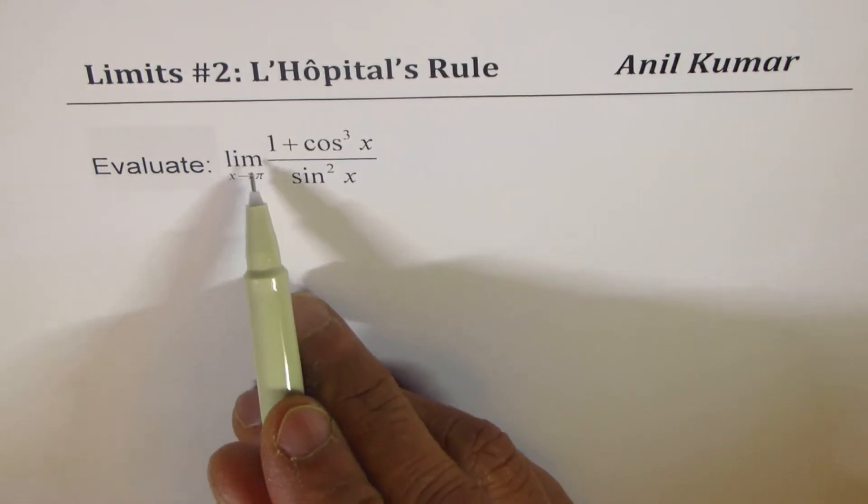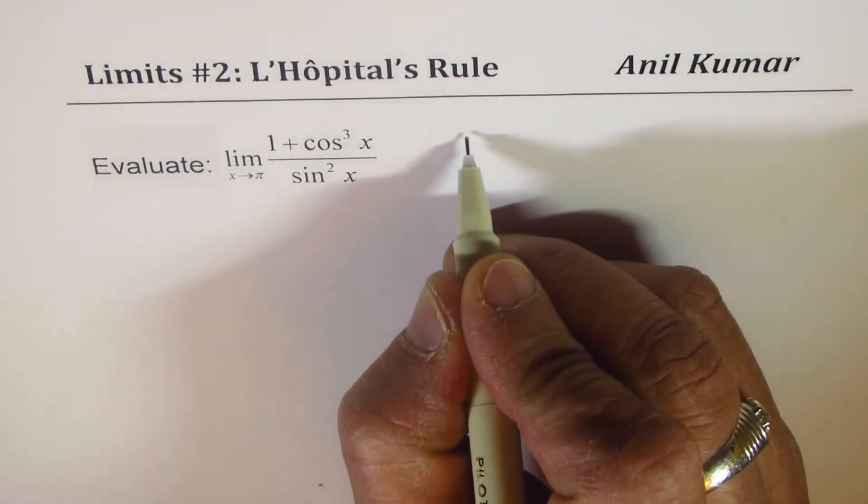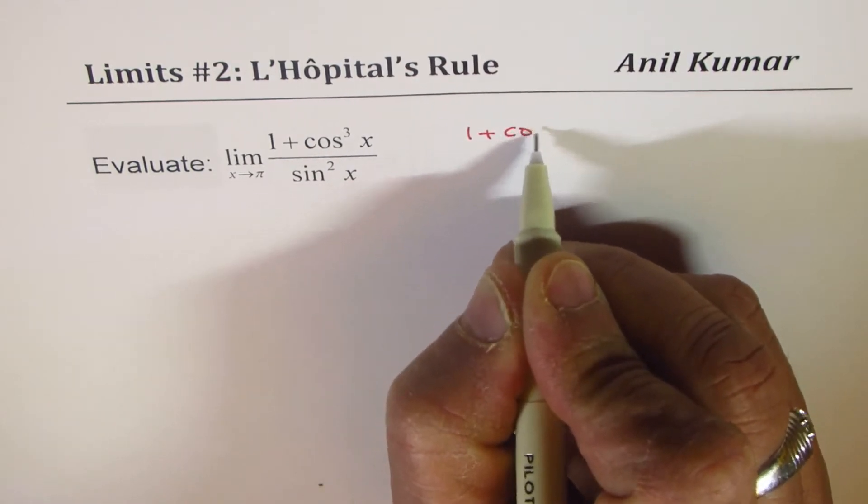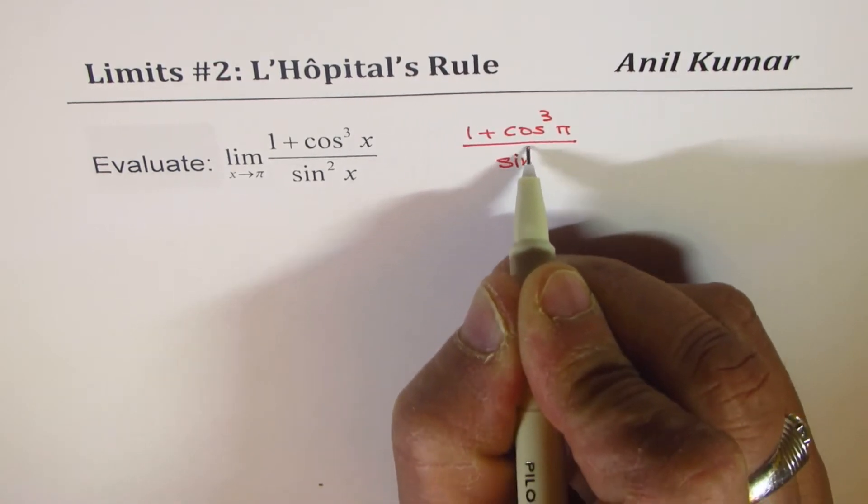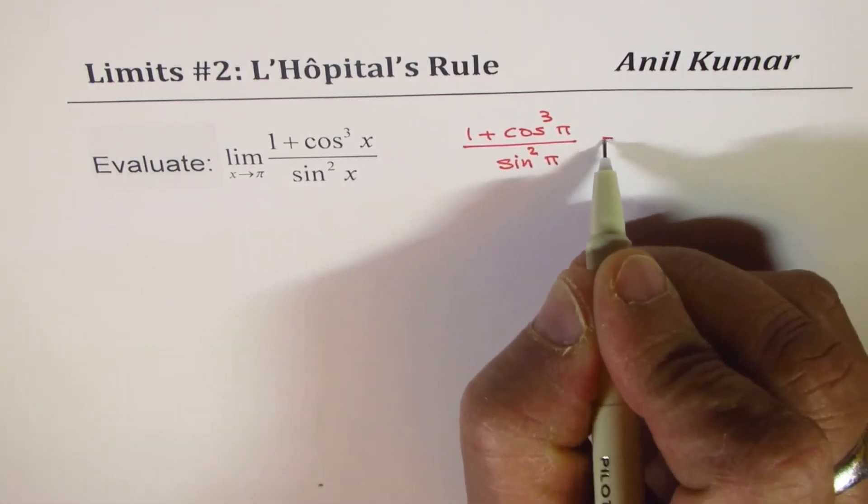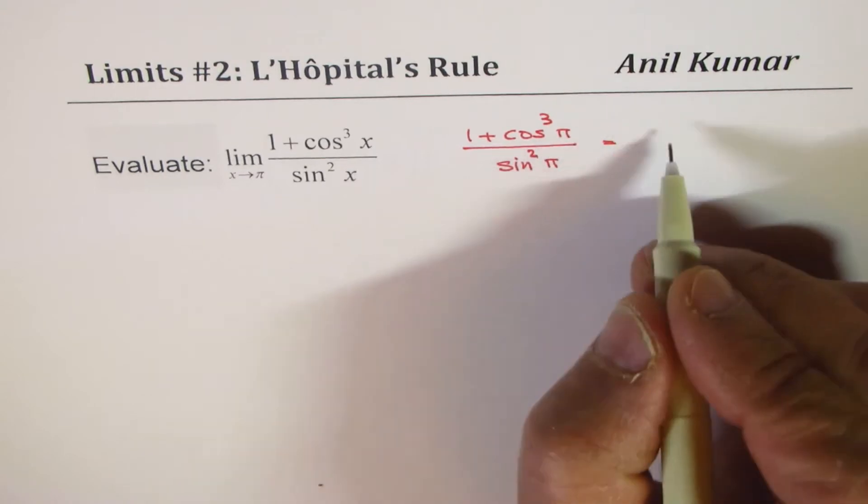If I substitute π here, what do I get? I get (1 + cos³π) / sin²π. Now, cos³π is -1, so we get 1 - 1.